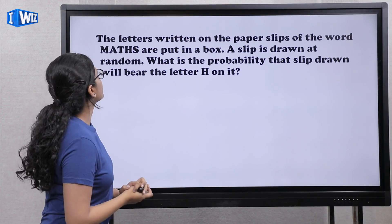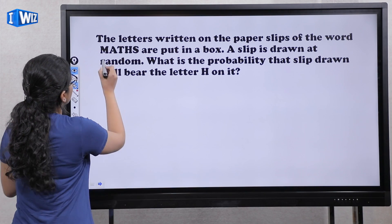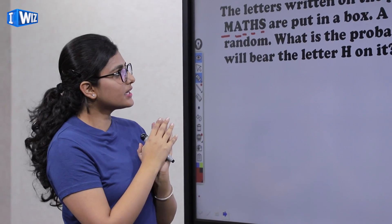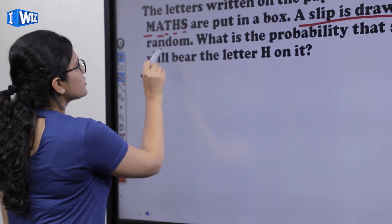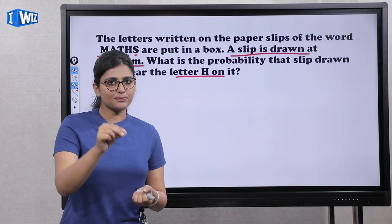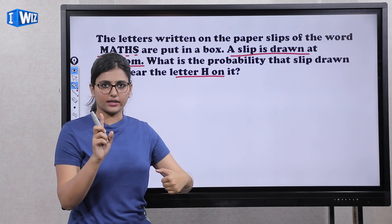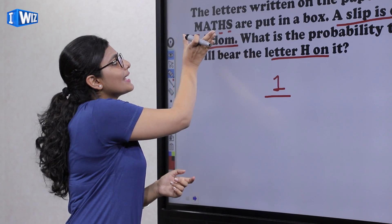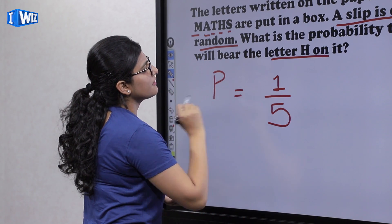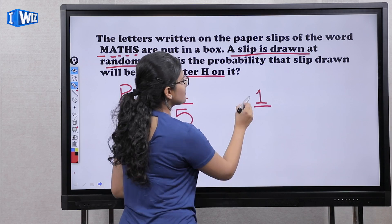The letters of the word MATHS — M, A, T, H, S — are written on separate paper slips and put in a box. A slip is drawn at random. What is the probability that the slip drawn will have the letter H on it? H is a single letter, so the favorable outcome is 1. The total number of letters in MATHS is 5. So the probability is 1 by 5. Similarly, for any other letter such as A or T, the probability is also 1 by 5.